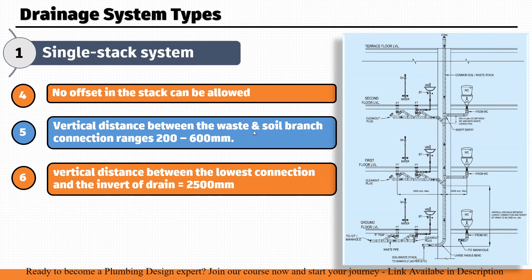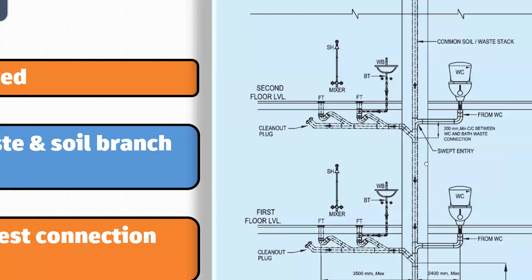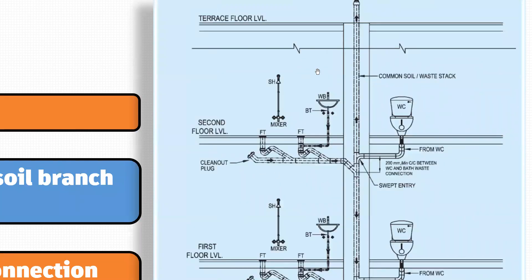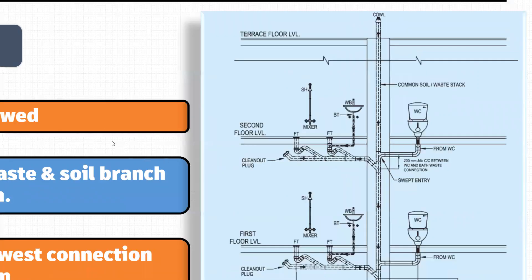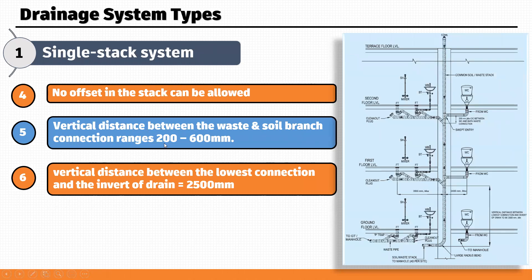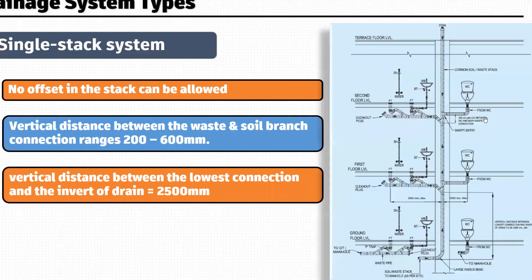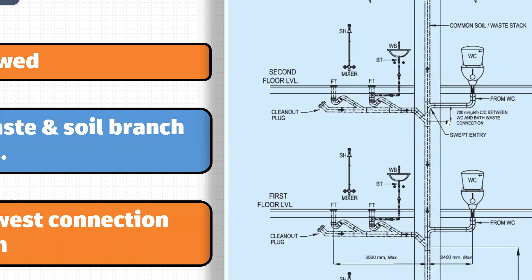The sixth point: the vertical distance between the waste branch connection and the soil branch connection to the common stack must range from a minimum of 200 mm to a maximum of 600 mm. The center-to-center distance between these two connections must be at least 200 mm and not more than 600 mm.